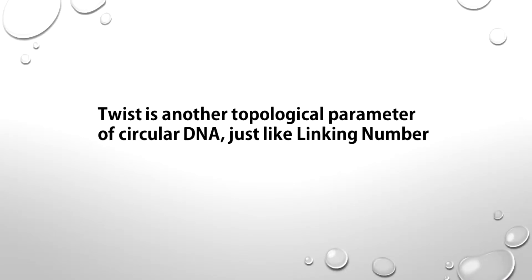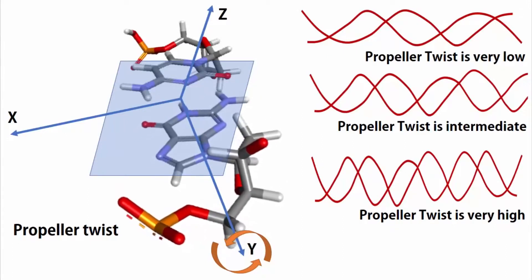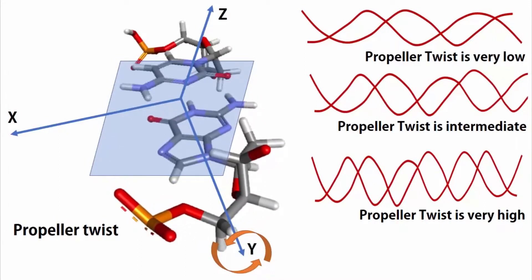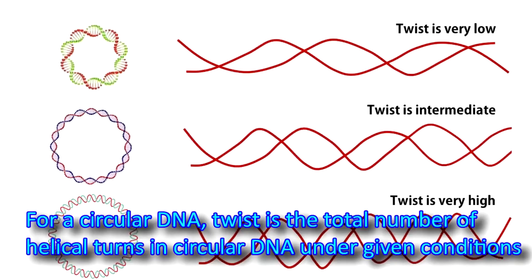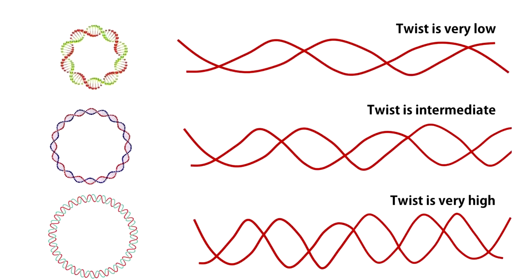Twist is another topological parameter of circular DNA, just like linking number. Remember the base pair parameter propeller twist? This parameter represents a rotation of one base with respect to the other along the y-axis. Higher propeller twist reflects a higher helical twist of a DNA molecule. Twist is the total number of helical turns in circular DNA under given conditions. Since DNA is a right-handed helix with 10.5 base pairs per turn, twist is a large positive number for any natural DNA.